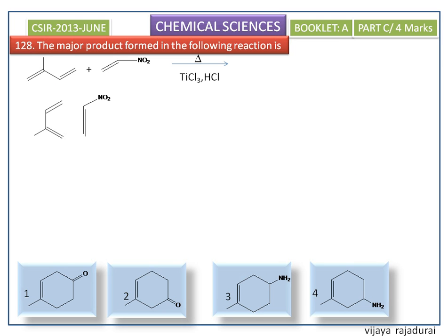In the last video we discussed the regiochemistry in the Diels-Alder reaction. According to regiochemistry, this carbon atom will get more electron density because of the electron-donating group on the second carbon atom of the diene. On the dienophile, we have an electron-withdrawing group, so it withdraws electrons towards itself, reducing electron density on its second carbon atom.